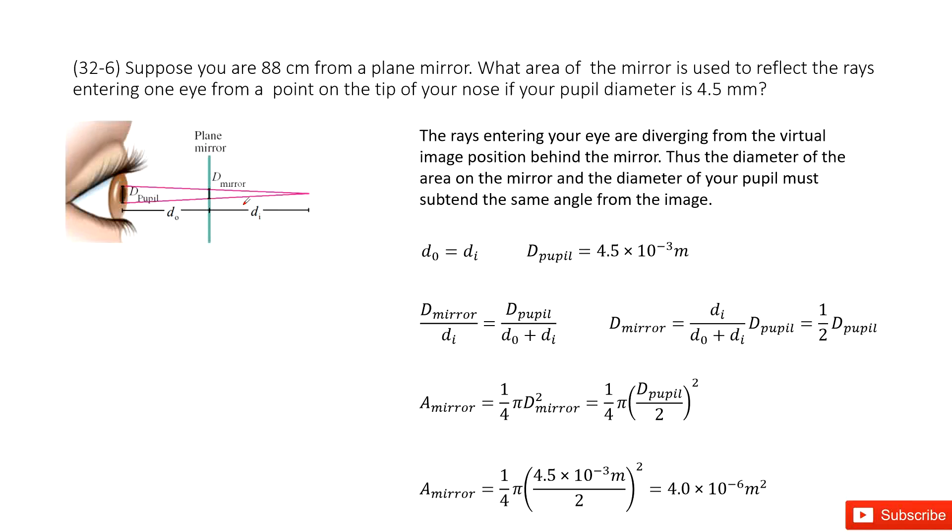Suppose you are 88 centimeters from a plain mirror. What area of the mirror is used to reflect the rays entering one eye from a point on the tip of your nose if your pupil diameter is 4.5 millimeters? This quantity is given: D_pupil. We write it there.